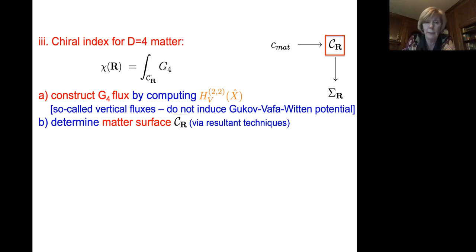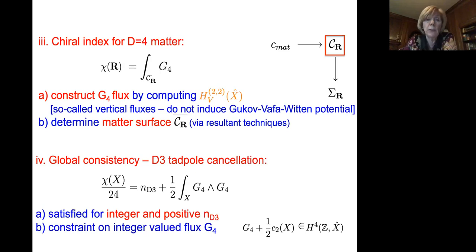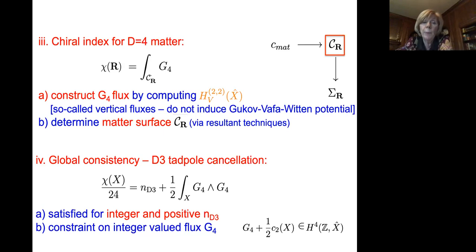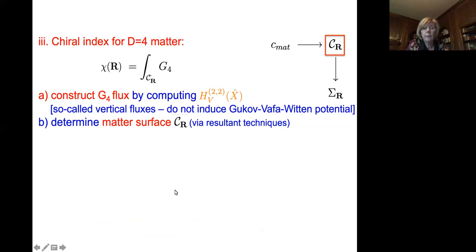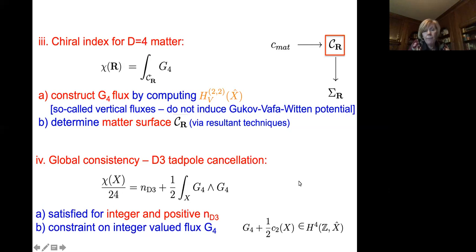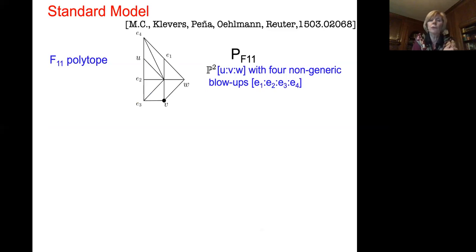A consequence of turning on G4 fluxes is that geometry alone is not sufficient for consistency — we must cancel D3-brane tadpoles sourced by these G4 fluxes. The tadpole cancellation is encoded in the Euler number of the Calabi-Yau fourfold, the flux contribution, and the number of D3-branes. For a globally consistent construction, the number of D3-branes must be a positive integer, and there are non-trivial constraints on the quantization of G4 fluxes as well.